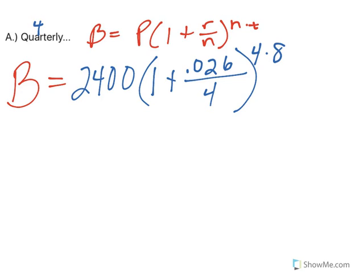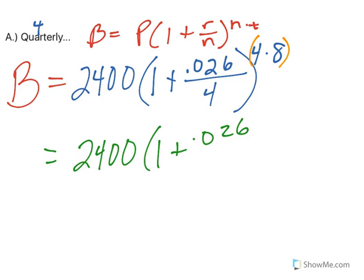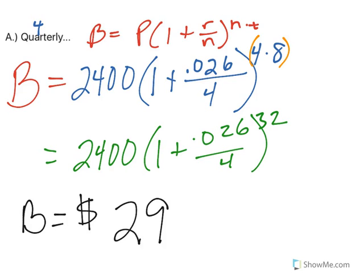Your calculator may or may not be able to handle this. I think an easier way is to go ahead and take 4 times 8, which is 32. I always do my exponent first before I plug it into my calculator. If we compound quarterly for 8 years, our balance will be $2,952.92.